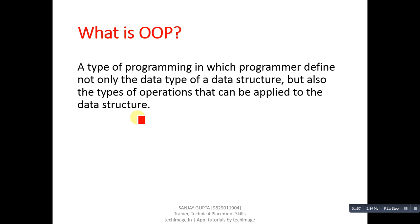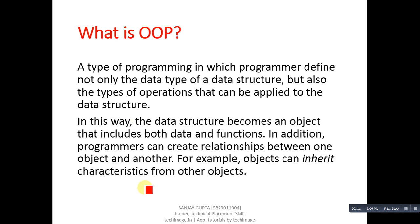Next question: what is OOP? It stands for object-oriented paradigm — a type of programming in which the programmer defines not only the data type of a data structure but also the type of operations that can be applied to the data structure. In this way, the data structure becomes an object that includes both data and functions.